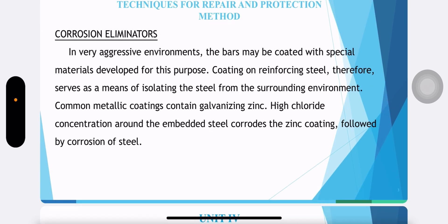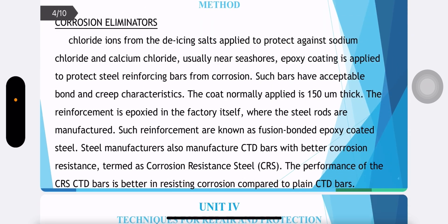In a very aggressive environment, the bars may be coated with special materials developed for this purpose. Coating reinforcing steel means isolating the steel from the surrounding environment. Chloride ions from de-icing salts such as sodium chloride and calcium chloride, usually near sea shores, require epoxy coatings applied to protect steel reinforcing bars from corrosion. Such bars have acceptable bond and creep characteristics. The coat is normally applied 150 microns thick, and the reinforcement is epoxy coated in the factory itself.